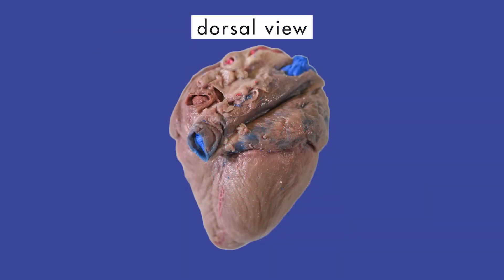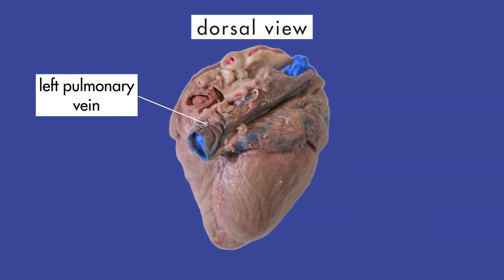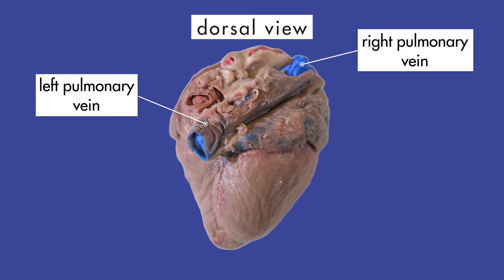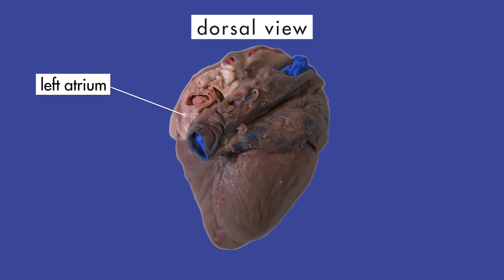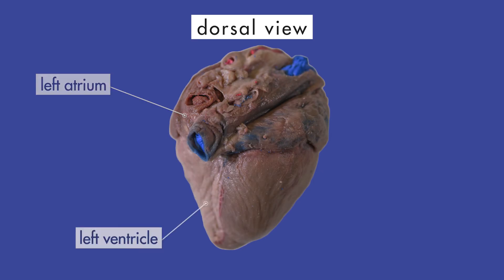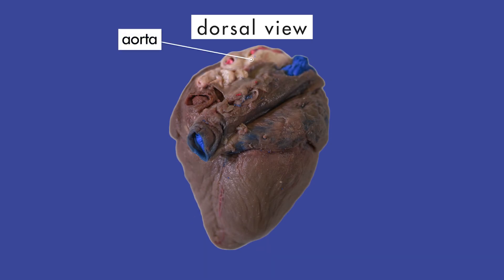If we turn the heart over, we can see the left pulmonary vein and the right pulmonary vein. The pulmonary veins empty oxygenated blood into the left atrium of the heart. From the left atrium, blood flows into the left ventricle. From the left ventricle, blood is pumped into the major artery, which is the aorta. The aorta branches into other arteries that carry blood to other parts of the pig's body.